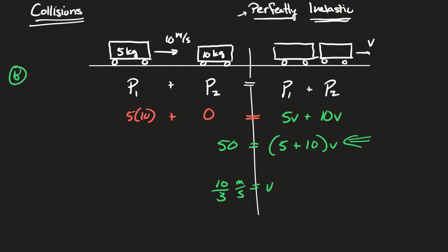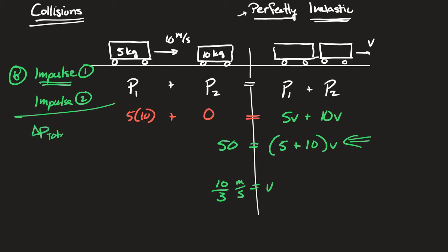Follow-up question number one: what was the impulse experienced by car one? This problem was about momentum, but car one had a change in momentum. I would expect you to calculate the impulse of car one and car two. Car one slowed down, so it probably has a negative impulse because its momentum got smaller. Car two sped up, so it has a positive impulse. I would make you show that the total change in impulse equals zero.